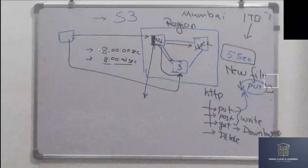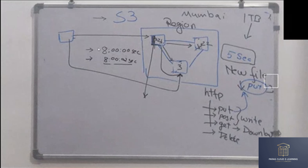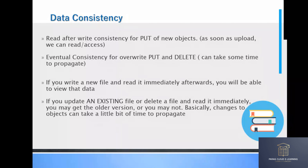As soon as I upload the file, I can access it the very next second, regardless of whether it's in another data center or not. It will navigate you to the data center or availability zone where your file was created. It's called read-after-write consistency — as soon as you write data into the S3 bucket, you can immediately access the file.